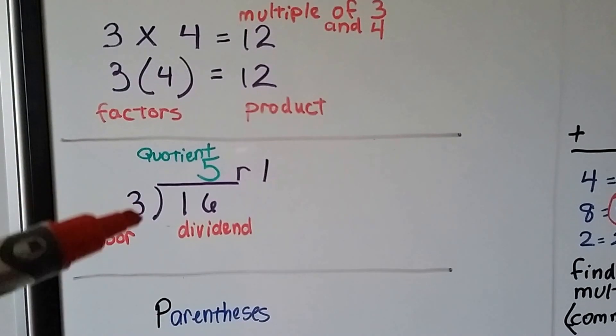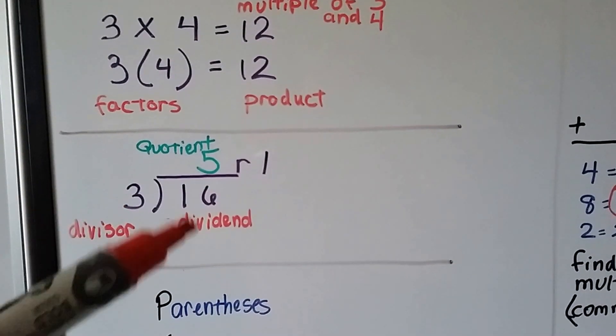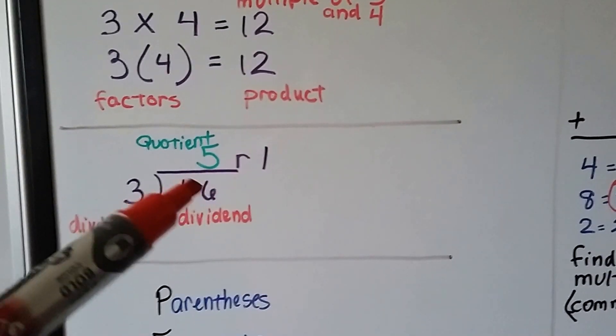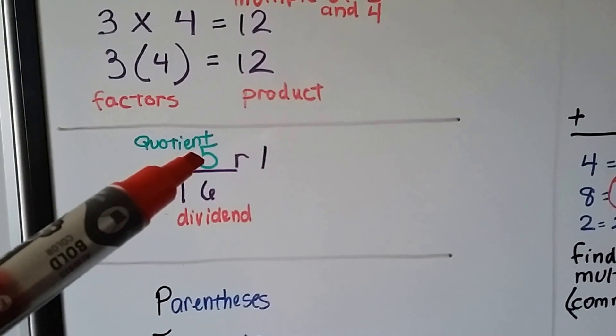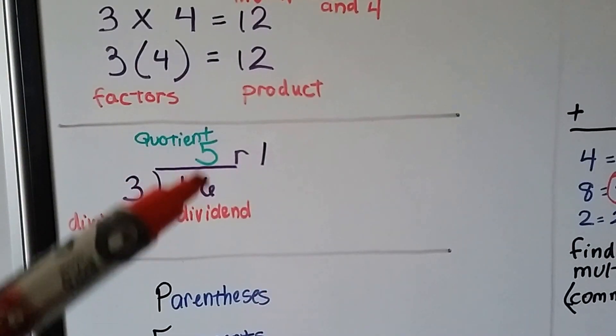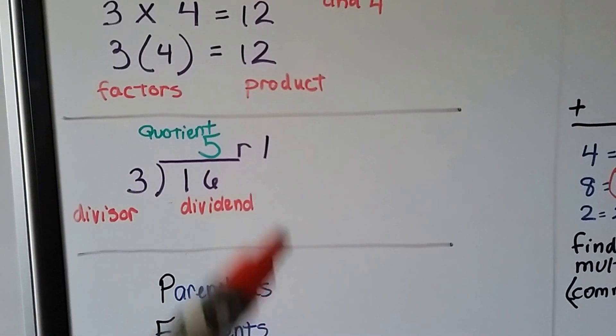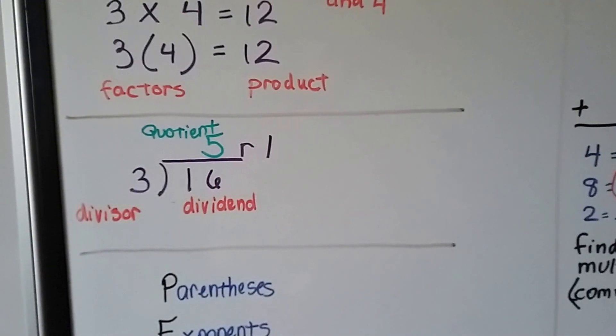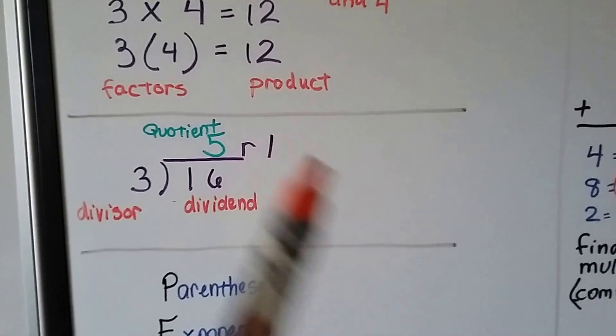For division, this outside number is our divisor. This number underneath here is our dividend. Our quotient is our answer that goes above the place value that it belongs. And we would write our remainder as R and then our remainder.